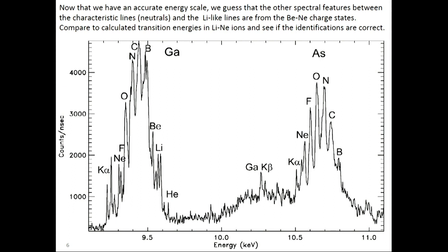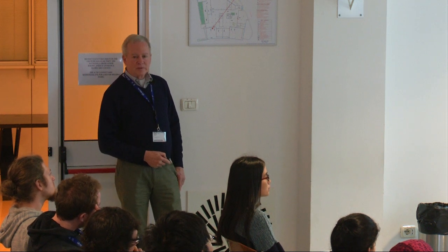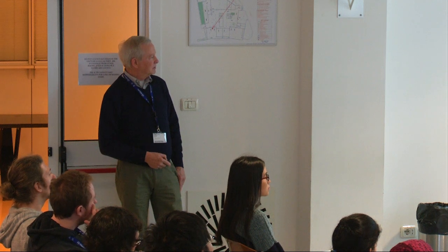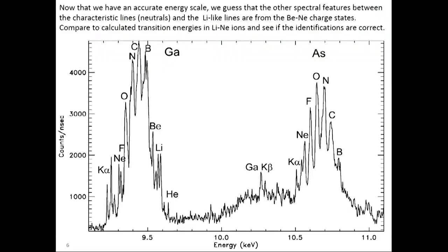Now that we know the K-alpha lines and the lithium- and helium-like lines, we know these transition energies. If we know these are neutral or singly ionized, and these are 2-electron ions, 3-electron ions — let's just count: 4-electron, 5, 6, 7, 8, 9, 10 — so perhaps these features are from the lithium-like to the neon-like charge states.